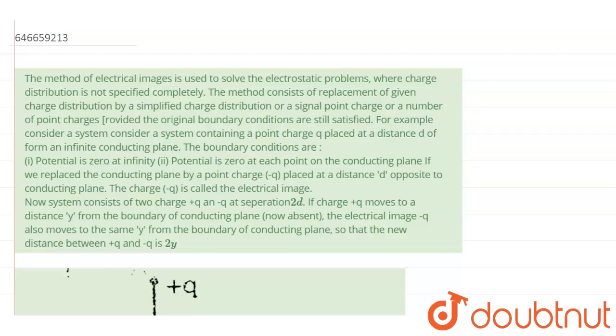from an infinite conducting plane. The boundary conditions are: potential is zero at infinity, and potential is zero at each point on the conducting plane. If we replace the conducting plane by a point charge placed at a distance d opposite to the conducting plane, the charge minus q is called the electrical image.